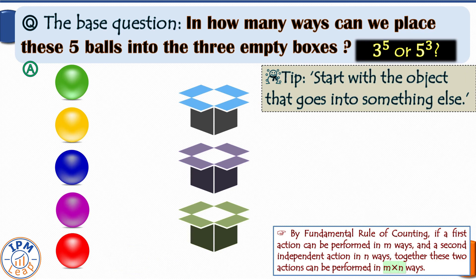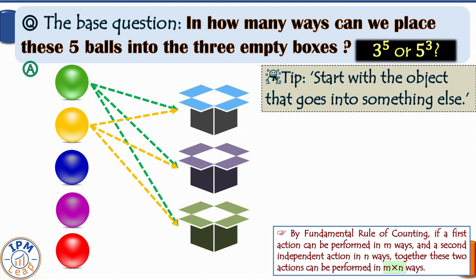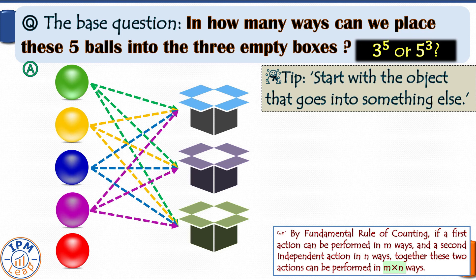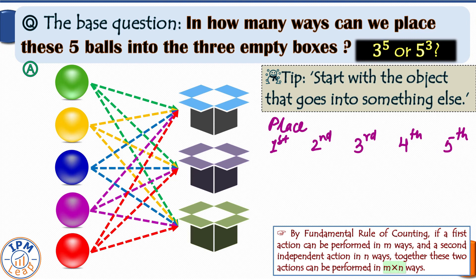In our case we start with balls. Consider the number of ways in which we can place each ball turn by turn. The first ball can be placed in three ways — into the first box, into the second box, or into the third. Corresponding to these three ways of placing the first ball, the second ball can also be placed in three ways. Similarly, the third, fourth, and fifth balls can each be placed in three ways. If you decide to place one ball in any particular box it does not affect your options for other balls, because all boxes can contain any number of balls. The action of placing one ball remains independent from the action of placing any other ball.